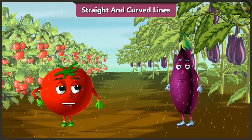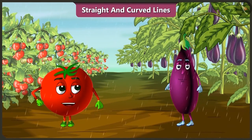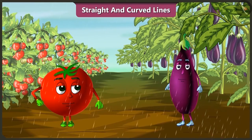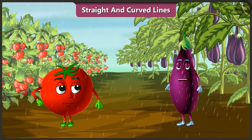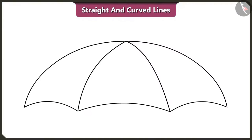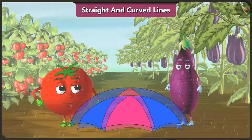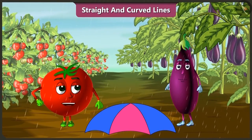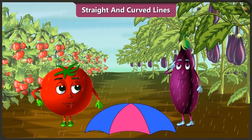Bingu says: before it starts raining heavily, please find a plan to protect ourselves from the rain. Bingu replies: I will make an umbrella very quickly! Look, the umbrella is made using these curved lines. But how will we hold the umbrella?